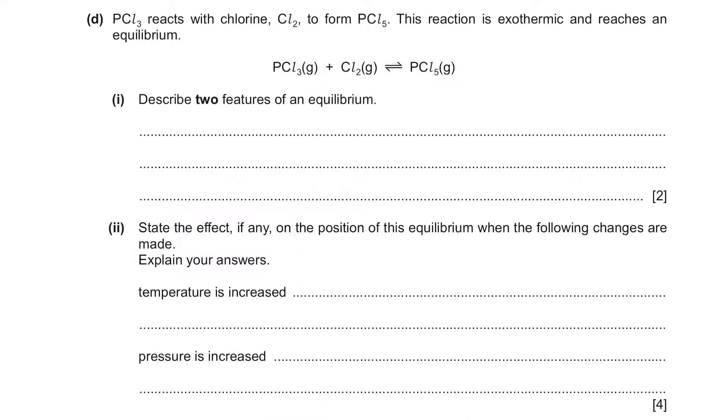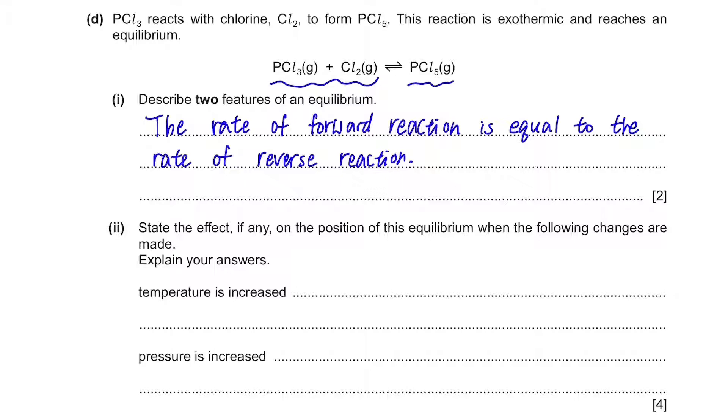Part D. PCl3 reacts with chlorine Cl2 to form PCl5. This reaction is exothermic and it reaches an equilibrium. Describe two features of an equilibrium. We can first mention the most common definition of an equilibrium, which is the rate of forward reaction equals the rate of reverse reaction. And the second feature is that both the reactants and products will have constant concentrations.